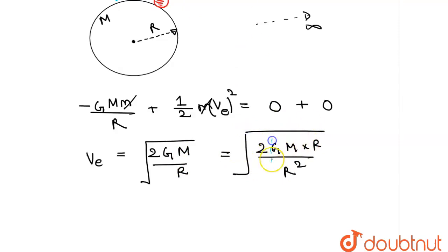We can see that GM over R² is nothing but acceleration due to gravity g. So this can also be written as √(2gR).